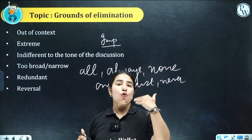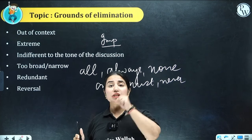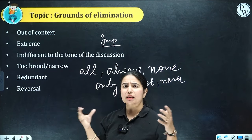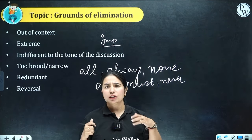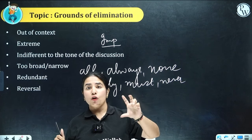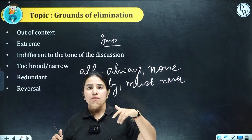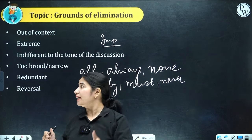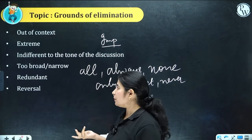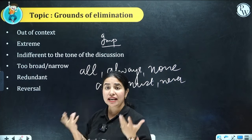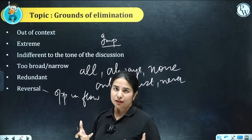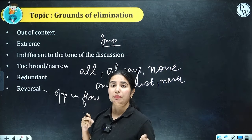Sometimes statements use words that make claims stronger than the author's claim — those are red flags. Then there are choices that are too broad or too narrow — beyond the scope of the discussion. For example, if the passage is specifically about the textile industry, an answer saying 'this technology helped all industries in the USA' is too broad. If a choice doesn't holistically cover the passage, it is a weak answer. Also watch out for redundant choices — repetitive, no new idea — and reversal — opposite in flow or against the author's perspective.